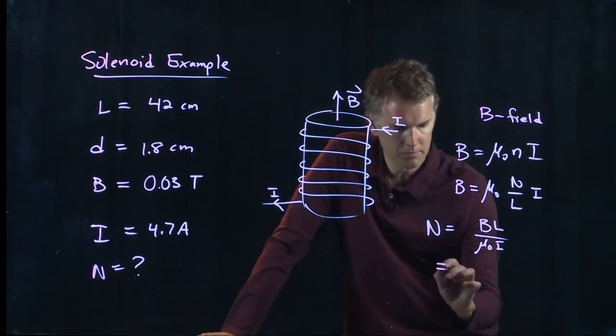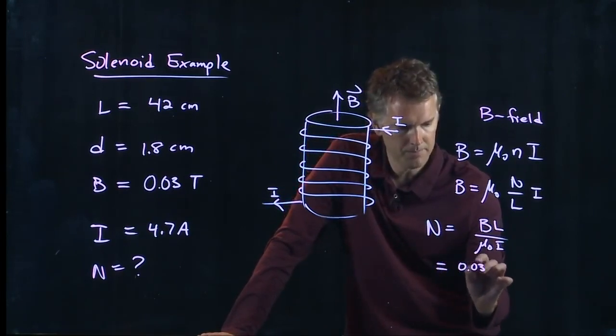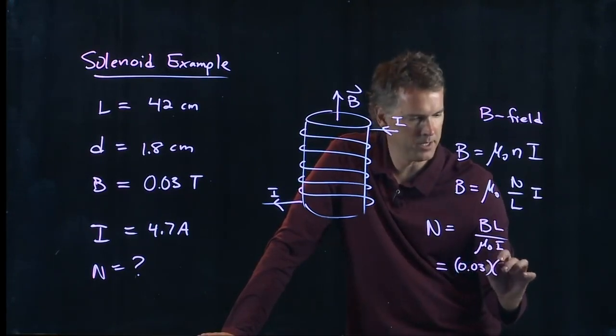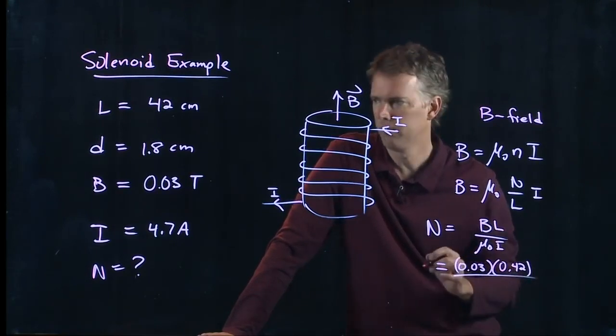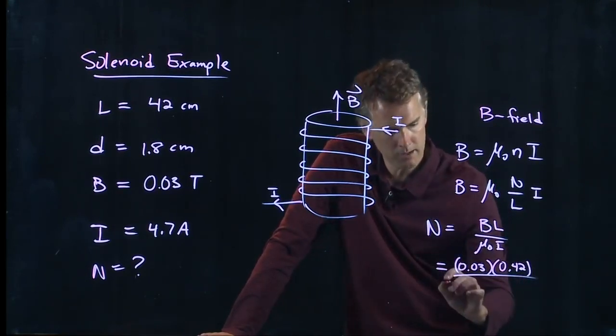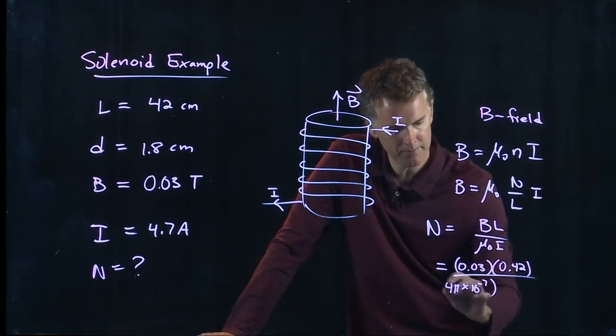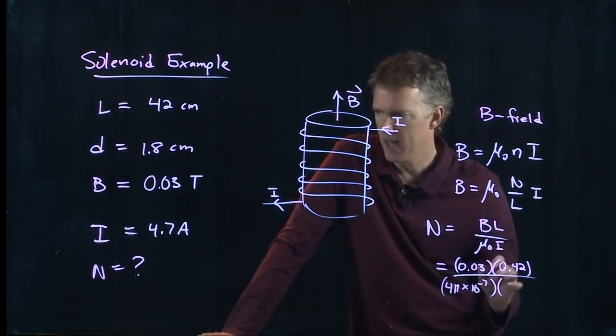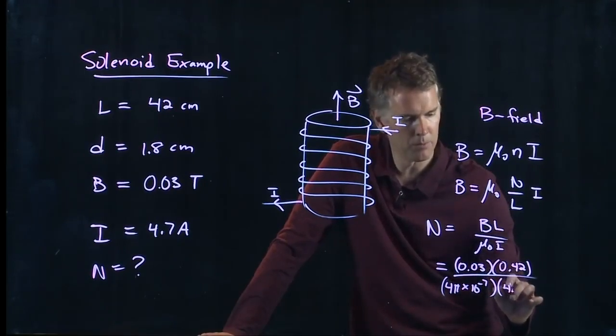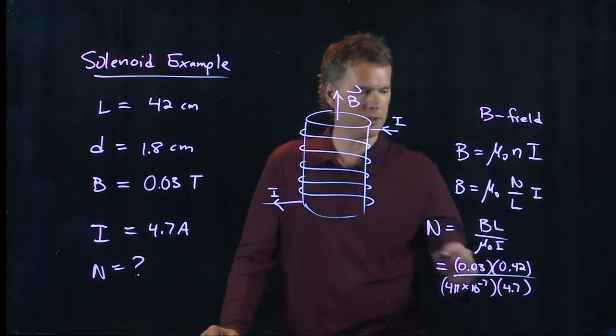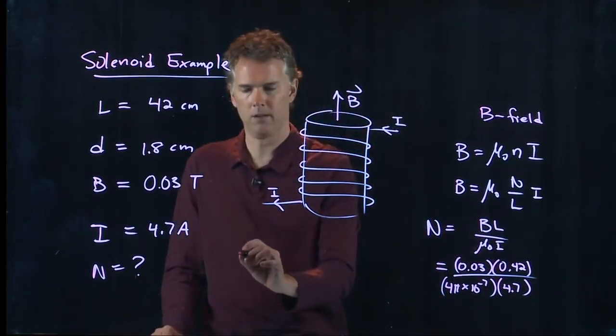Let's plug in some numbers and see what we get. B was 0.03, L was 42 centimeters but in SI units that is 0.42 meters, μ₀ is 4π times 10 to the minus 7, and I is 4.7 amps.